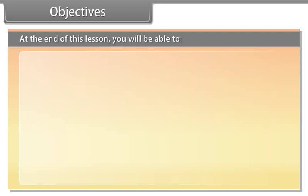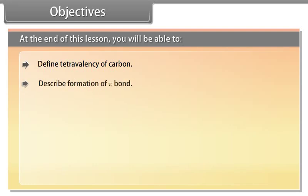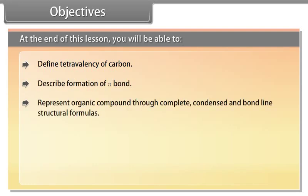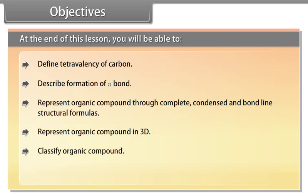At the end of this lesson, you will be able to: define tetravalency of carbon; describe formation of pi-bond; represent organic compounds through complete, condensed, and bond-line structural formulas; represent organic compounds in 3D; classify organic compounds; and describe nomenclature of organic compounds.